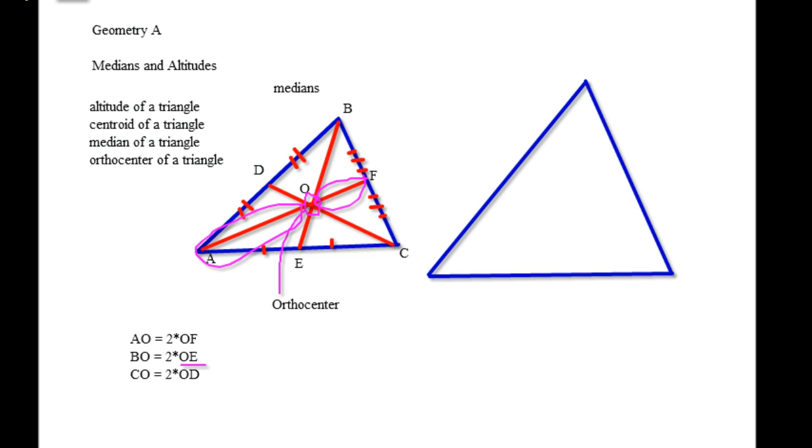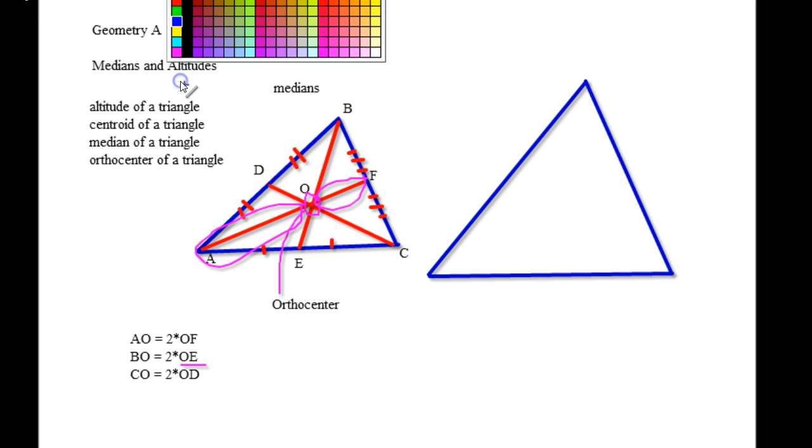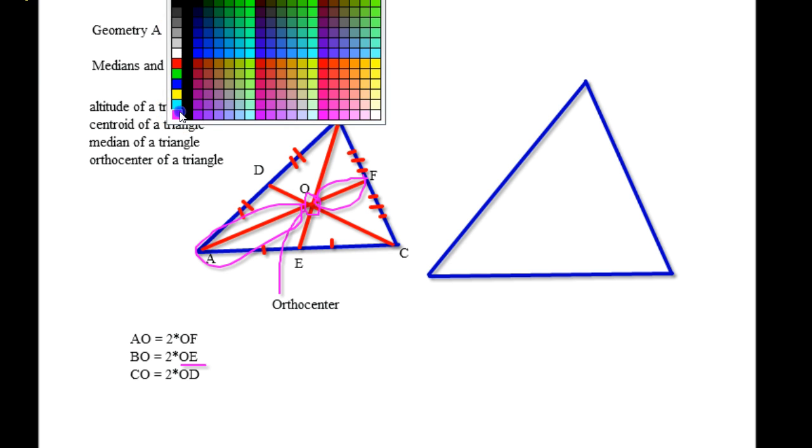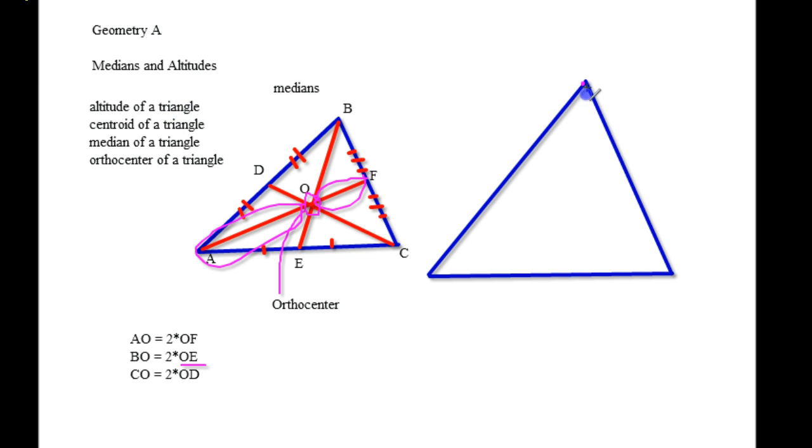Now the altitudes, what you're going to do is, let's go purple, yeah, purple, I feel like purple today. You're going to go from one side to the opposite side, you're going to go from one vertex to the opposite side and just make a right angle. And there's tons of great applications for why this works this way.